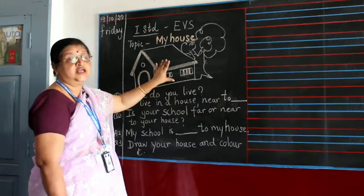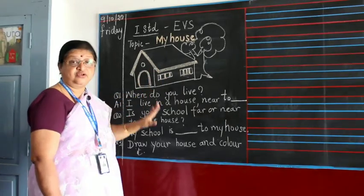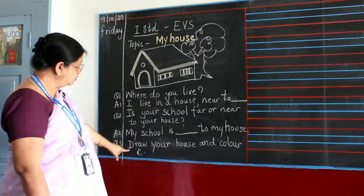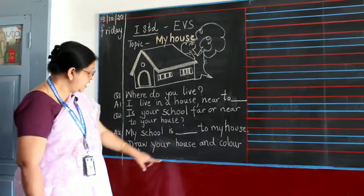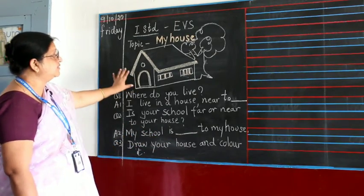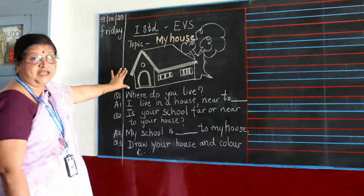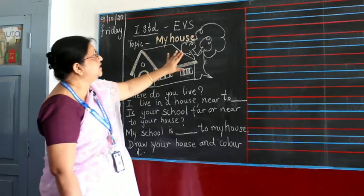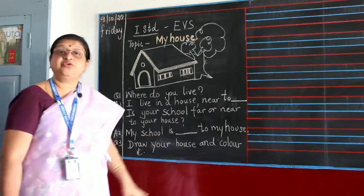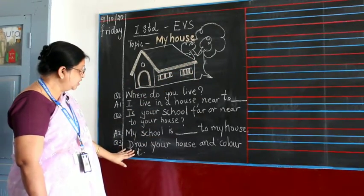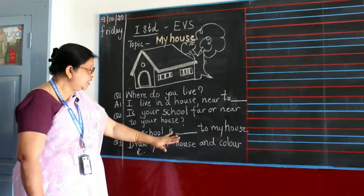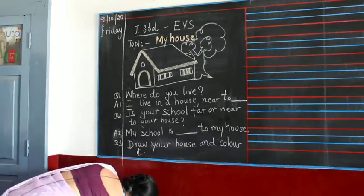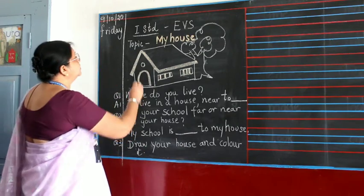These two questions tell about where and how your house is. I'll be giving you some more questions. For this time, you have to draw your house and color it. I have given you a plain outline with a tree, but you can draw your own house and color it.